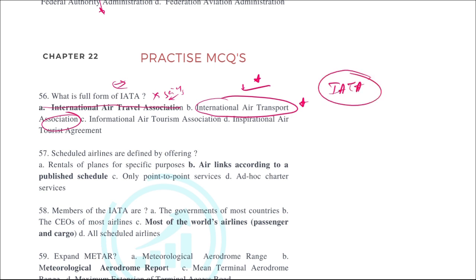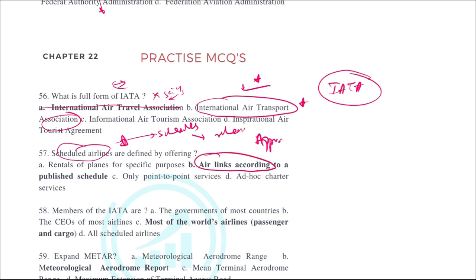Scheduled airlines are defined by offering flights according to a published schedule. They have a fixed, approved schedule released in advance. Airlines that operate according to an approved published schedule are known as scheduled airlines.